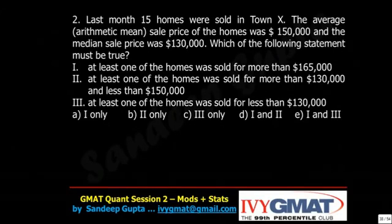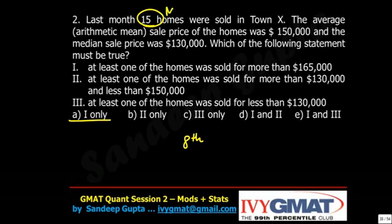This is one of the best questions I have seen on median, because very rarely do I see this being marked as the right answer. Let's assume the 8th value — because there are 15 homes, the middle value is the 8th — and the 8th value is equal to 130,000, as given.